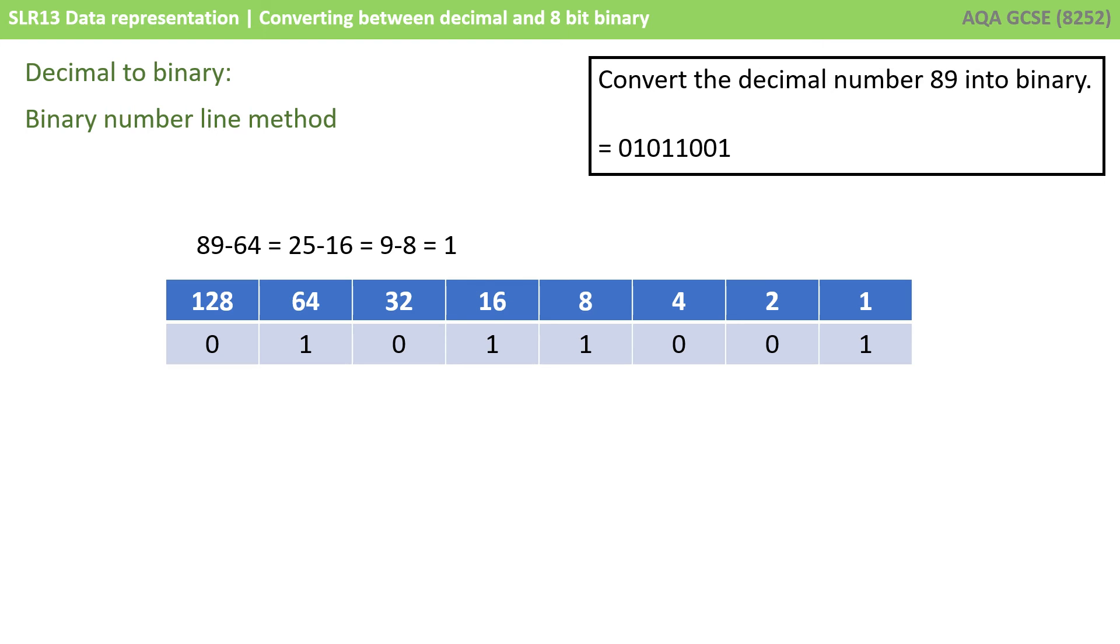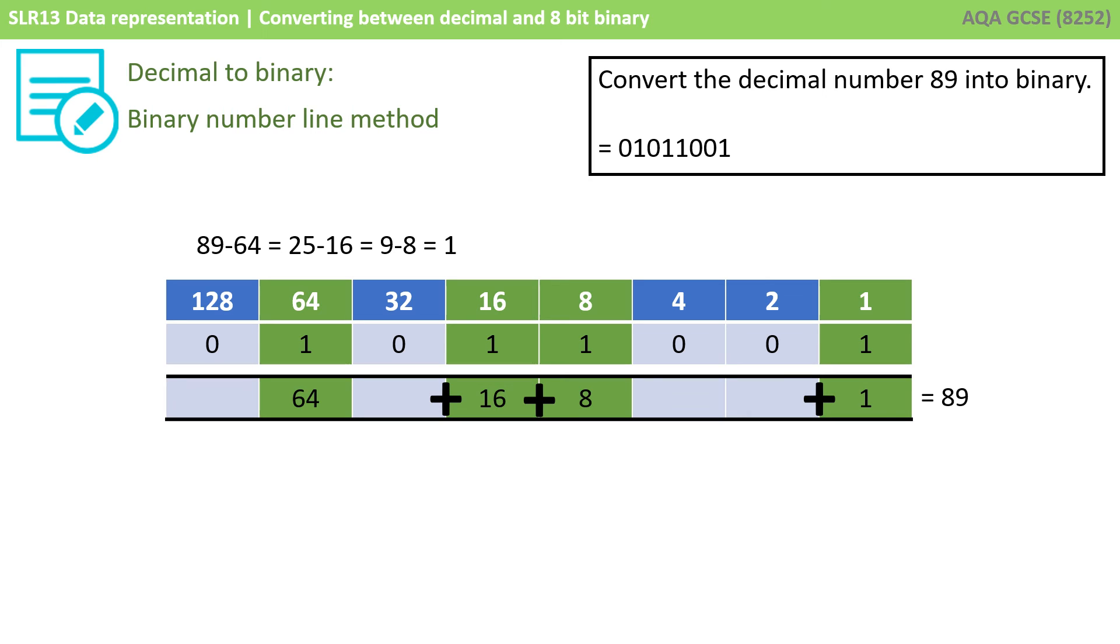This will work every single time and as you can see we have the same sequence of binary digits representing 89 as we did for the previous method. You can confirm that this is the number 89 by adding up any column that has a 1 in it. So we have 1 64 plus 1 16 plus 1 8 plus 1 1 giving us 89.